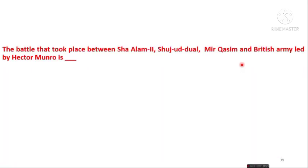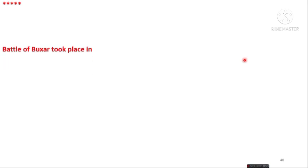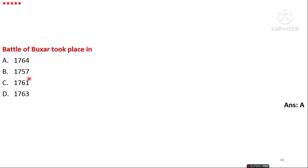The next question is: the battle that took place between Shah Alam II, Shuja ud-Daula, Mir Qasim, and British army led by Hector Munro is which war — First Carnatic War, Third Carnatic War, Battle of Buxar, or Battle of Plassey? The answer is C — the Battle of Buxar. The Battle of Buxar took place in 1764, while the Battle of Plassey took place in 1757.